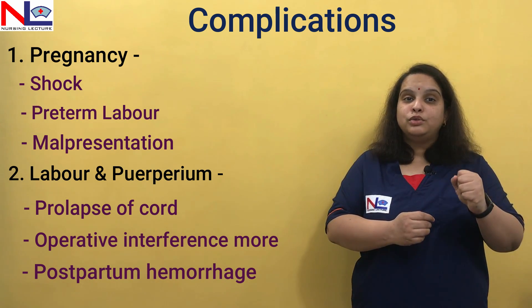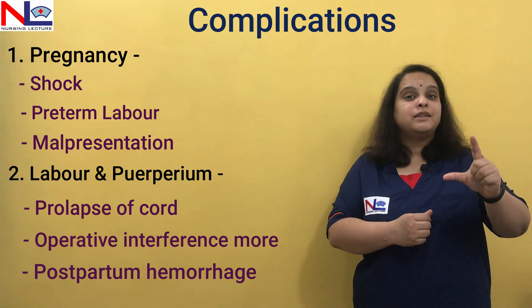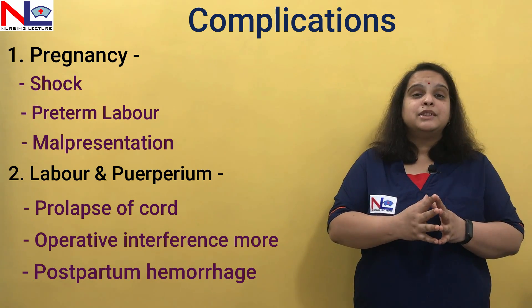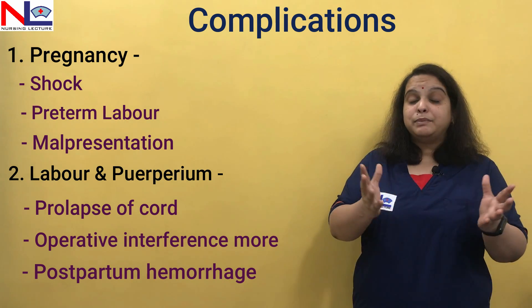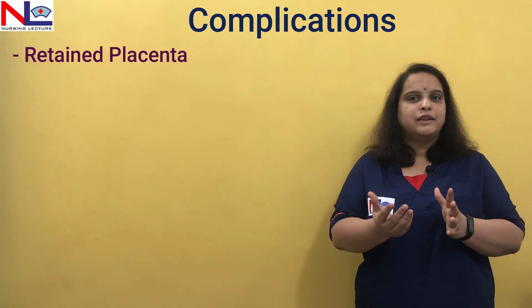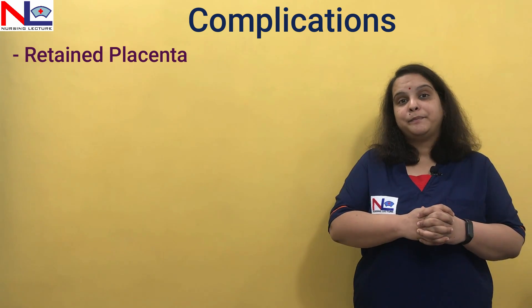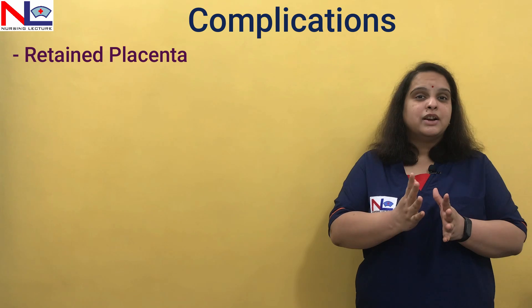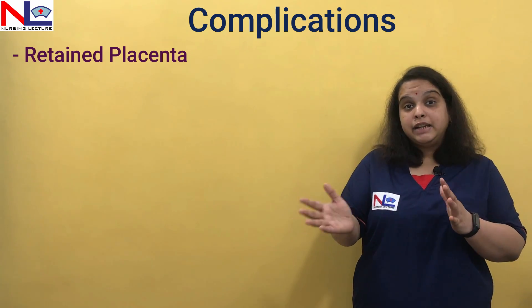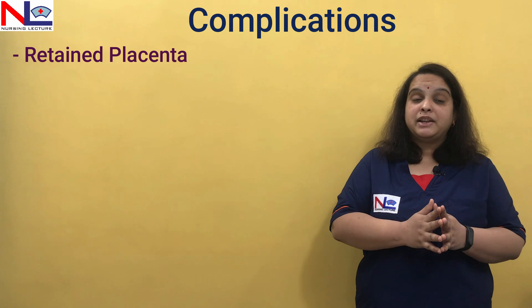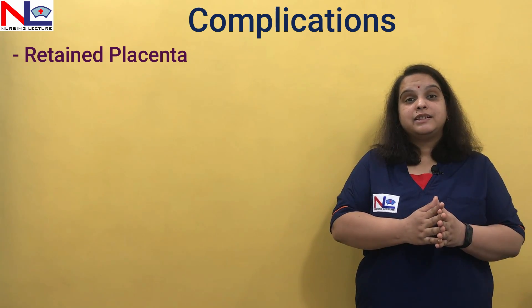If the muscle fibers are not occluded with strong uterine contractions, the vessels remain open and will bleed heavily. The muscles will not retract effectively in the lower segment. If the placenta is too big, retained placenta may occur — it will not separate easily. If morbid adherent placenta is present, the placenta won't be able to separate, and poor uterine tonicity may also lead to postpartum hemorrhage.